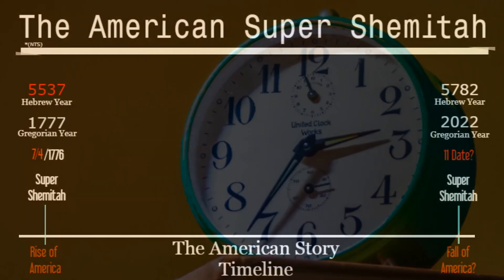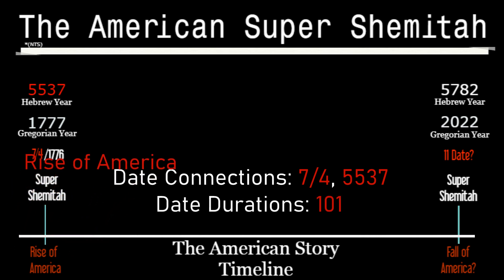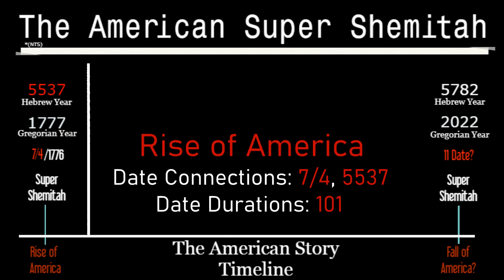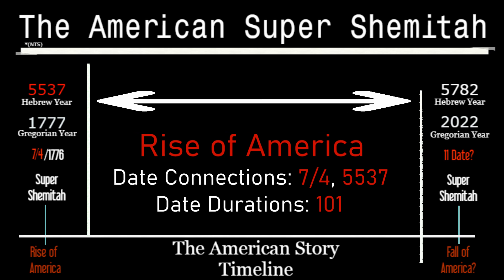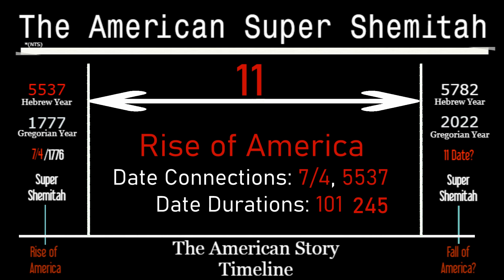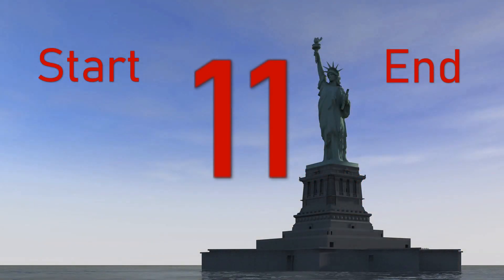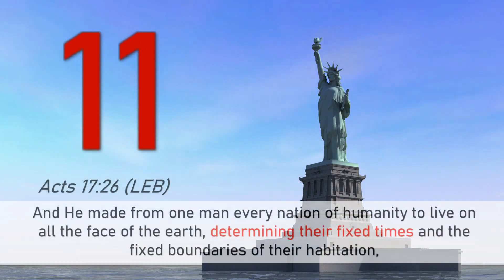We're picking up from where we left off, highlighting two 11-date duration connections in addition to an 11 relationship to a duration — all found at the rise of America occurring on a Super Shemitah. From that Super Shemitah to the Super Shemitah we're in now is also related to the number 11, being 245 years. 245 is related to 11, representing the chronological boundary markers of the American story, and is a concept illustrated in Acts 17:26.